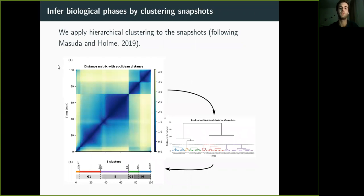So what we do is basically we want to infer biological phases. To do that, we use different snapshots. We have a temporal network, which is a list of snapshots. Each snapshot is like an instantaneous adjacency matrix. We use these as data points and we cluster them. We compute distances between these snapshots, and then we apply hierarchical clustering.